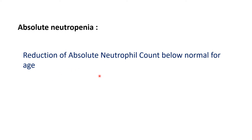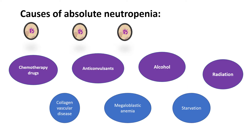Absolute neutropenia is a reduction of absolute neutrophil count below normal for age — below 2000 cells per cubic millimeter. Some laboratories use 2500, just as neutrophilia thresholds can also vary by laboratory.